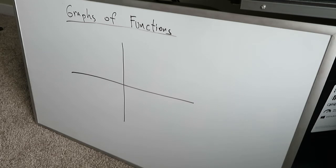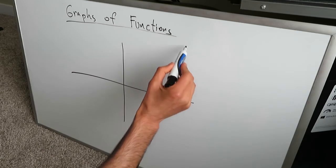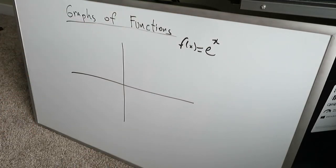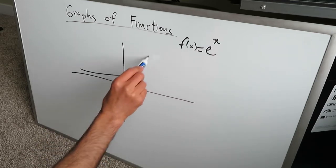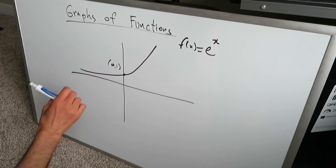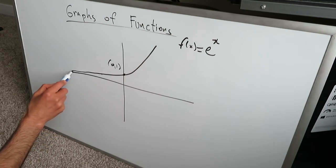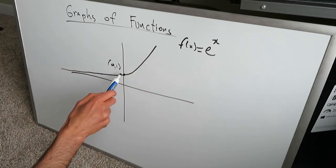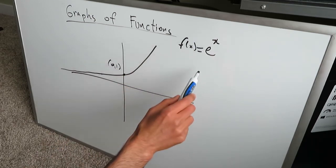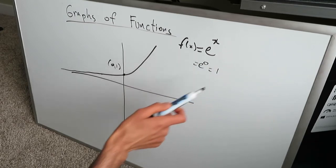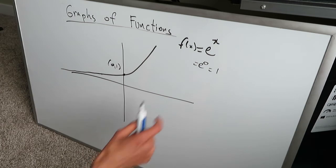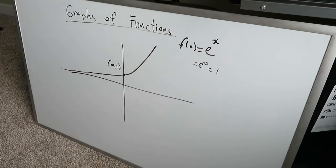I want to talk next about exponential functions. The graphs of exponential functions will have the form of e to the power of x. So y is equal to e to the power of x. A basic exponential graph function is going to go through 0 comma 1, getting as close as possible to y values of 0 but never touching it. Why is it intercepting at 0 comma 1? Because if you put 0 in place of x, e to the power of 0 gives you 1 — anything to the power of 0 is 1. Any normal number to the power of 0 is equal to 1.